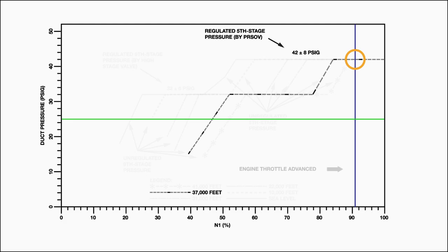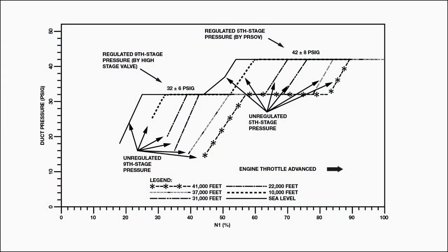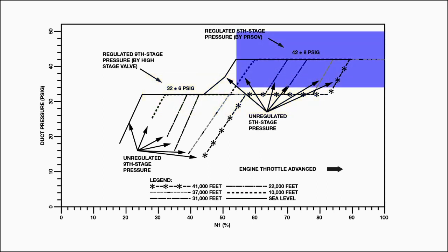Remember, if the cooling system is not sufficiently cooling the bleed air, the 450 sensor will cause the PRSOV to reduce duct pressure to increase cooling. So you should also troubleshoot the cooling system, including the PCCV, the 390 sensor, and the 450 sensor. Another thing to keep in mind when using these charts is the pressure tolerances. When operating in the regulated high stage mode, the HSV is regulating 9th stage air to 32 PSI, plus or minus 6 PSI. When operating in the regulated low stage mode, the PRSOV is regulating 5th stage air to 42 PSI, plus or minus 8 PSI.